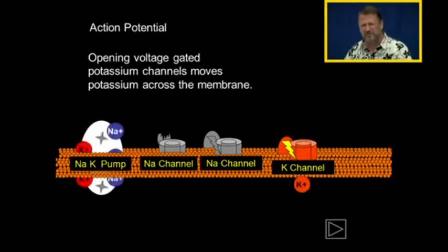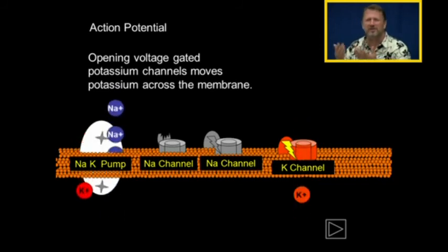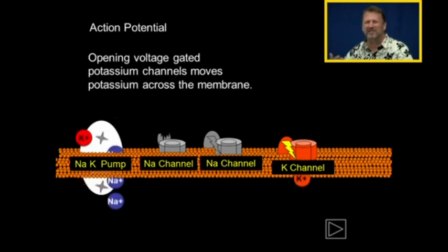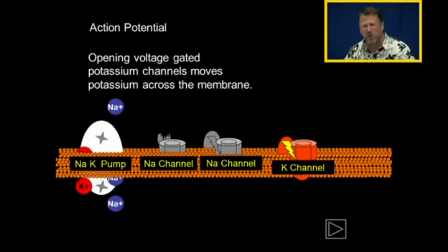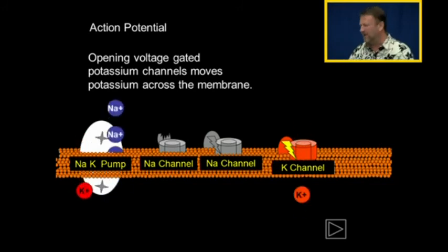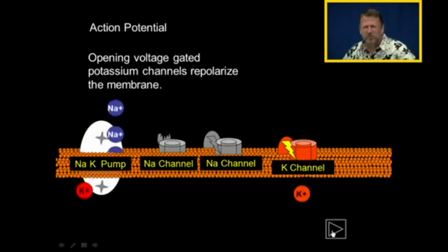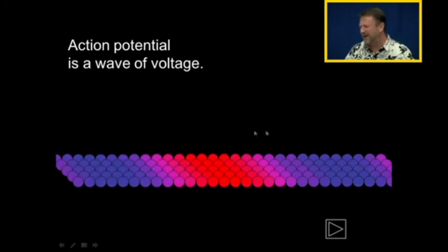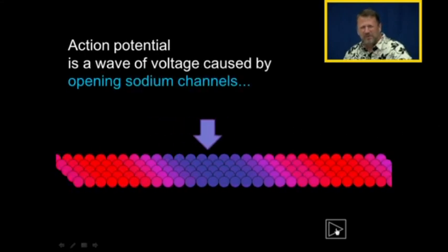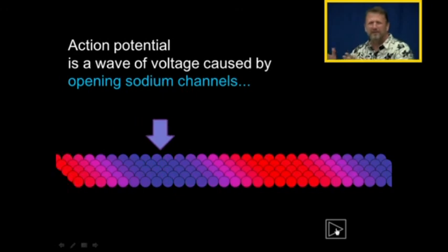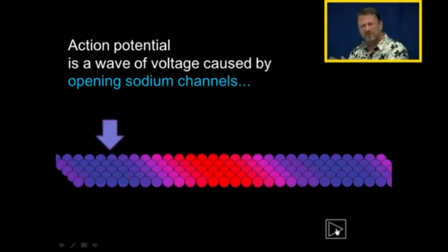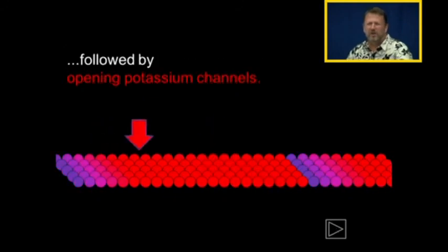Because the increased concentration of potassium inside and the positive charge inside of the membrane pushes the potassium out, that's what resets excitable membranes — potassium channels opening, letting the potassium out, and that repolarizes the membrane. So opening voltage-gated potassium channels repolarizes the membrane. Here is my axon of a neuron, and it's carrying the electrical signal one way. Action potential is a wave of voltage caused by opening sodium channels which depolarize the membrane, followed by opening potassium channels which reset the membrane.